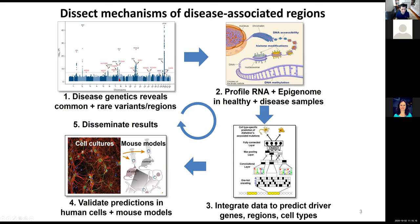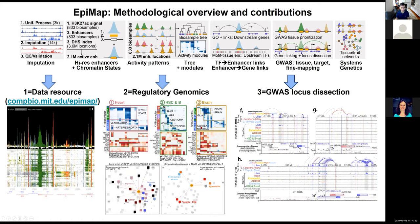The approach we take in my lab is to systematically start with disease genetics across common and rare variants, then profile RNA and the epigenome in healthy and disease samples. Over the last few years this has primarily been single-cell RNA sequencing and single-cell ATAC sequencing — my lab alone processed 1,500 post-mortem brain samples in the last 12 months. We integrate all these datasets to computationally predict driver genes, regions, and cell types, then validate predictions using cell cultures and mouse models.